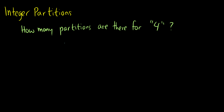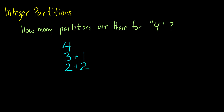We can write the number 4 as just 4, or we could write it as 3 plus 1. When we deal with partitions, 3 plus 1 is the same thing as 1 plus 3, so we only count it once — order does not matter in partitions. We can also write 4 as 2 plus 2, as 2 plus 1 plus 1, or as 1 plus 1 plus 1 plus 1. So the number of partitions of 4, p(4), is equal to 5.